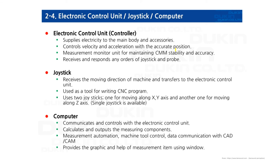Third, the electric control unit, also known as the controller. We usually call it the controller, so don't get confused. On the controller, the power switch is located for turning the machine on and off. The controller supplies electricity to the main body and accessories, and also controls velocity and acceleration with accurate positioning. So this component is in charge of CMM's stability and accuracy.